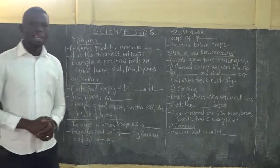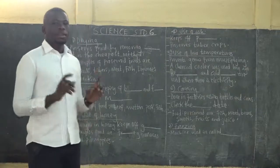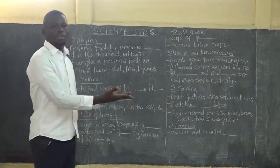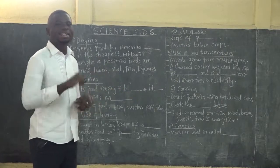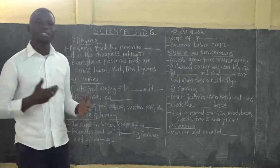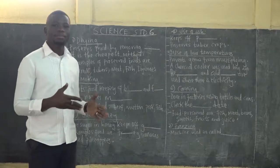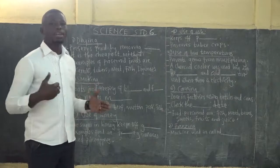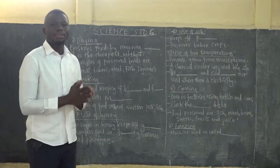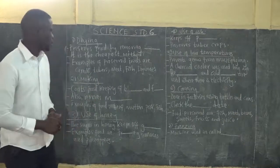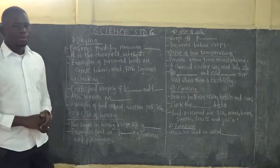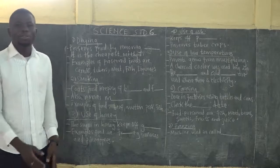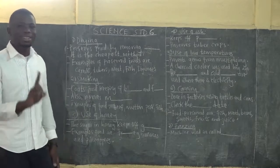Beginning with drying. How does drying preserve food? Drying is whereby you harvest your maize, air it in the sun, and it is dried by the sun. The sun removes moisture — the water in the maize — leaving the grains dry so that they can stay for long without going bad. Drying is also the cheapest method because you are not paying for the sun; it is just there ready for you.